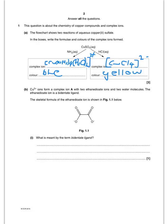It then gives the ethanedioate ion and asks what is meant by the term bidentate ligand. A bidentate ligand donates two electron pairs to a metal ion and forms two coordinate bonds to a metal ion. That's a really important definition to know.